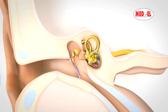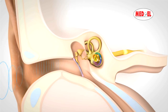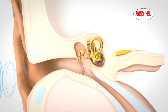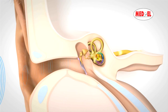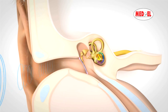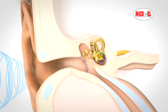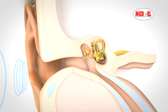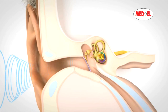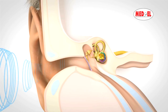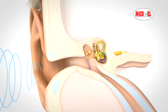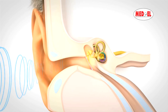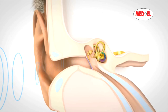A loss of hearing can range from a mild to moderate hearing deficiency to a total hearing loss. In general, there are three main types of hearing loss which differ from one another depending on the part of the ear that is affected, be it the outer, middle or inner ear.